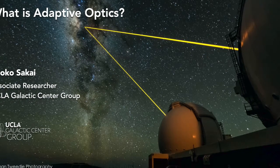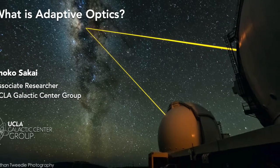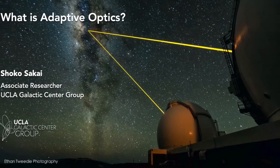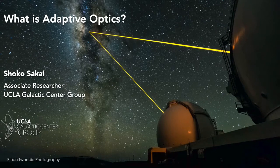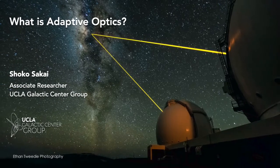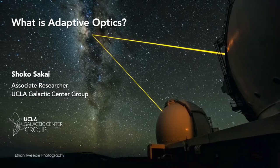Welcome to the Galactic Center Group at UCLA, where we study the supermassive black hole at the center of our own Milky Way galaxy. In this short video, we will show you why our group uses the technology called adaptive optics to observe the stars in the center of our galaxy.